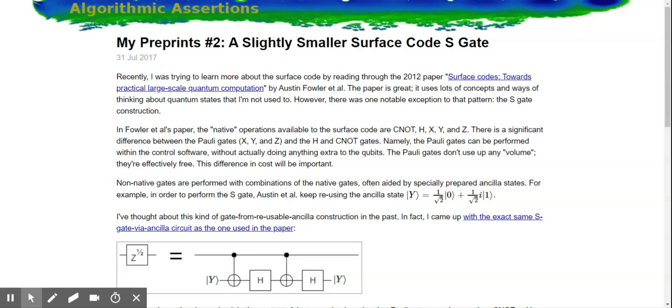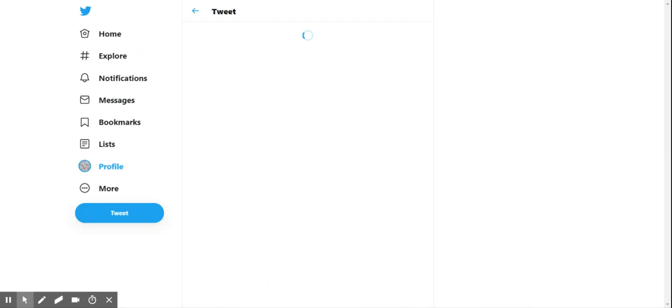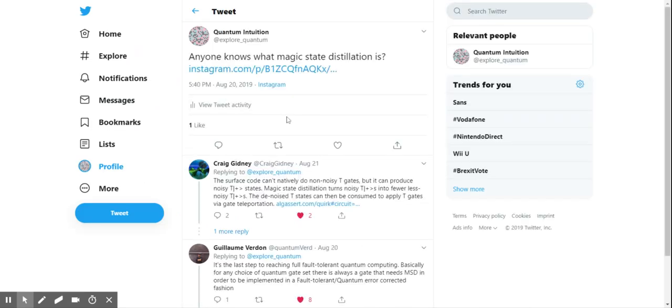I came across a while ago the concept of surface code, and I have absolutely no idea what it means. Also the term magic state distillation.